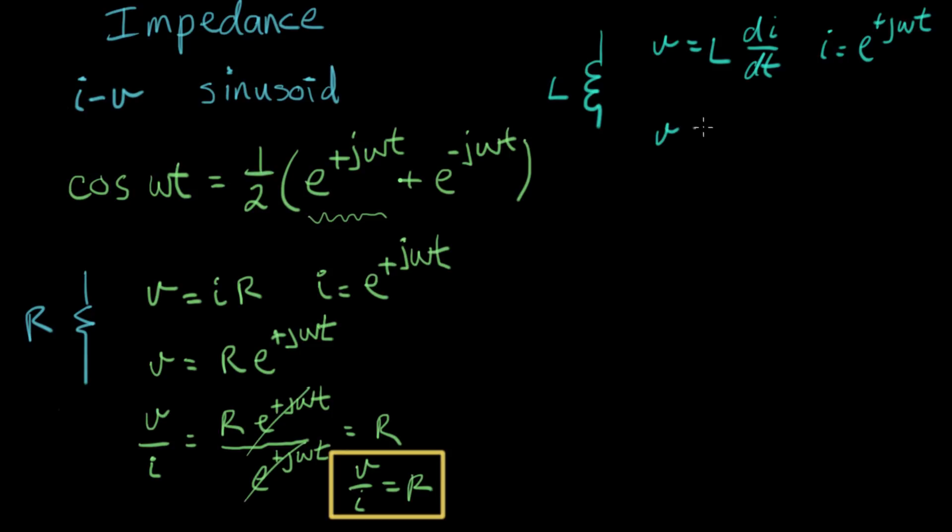So it's a complex exponential current that we're forcing through our inductor. And let's go ahead and work out what V is. So V equals L times d dt of this value here, e to the plus j omega t. Or V equals, now we take the derivative and the j omega term comes down to multiply L.